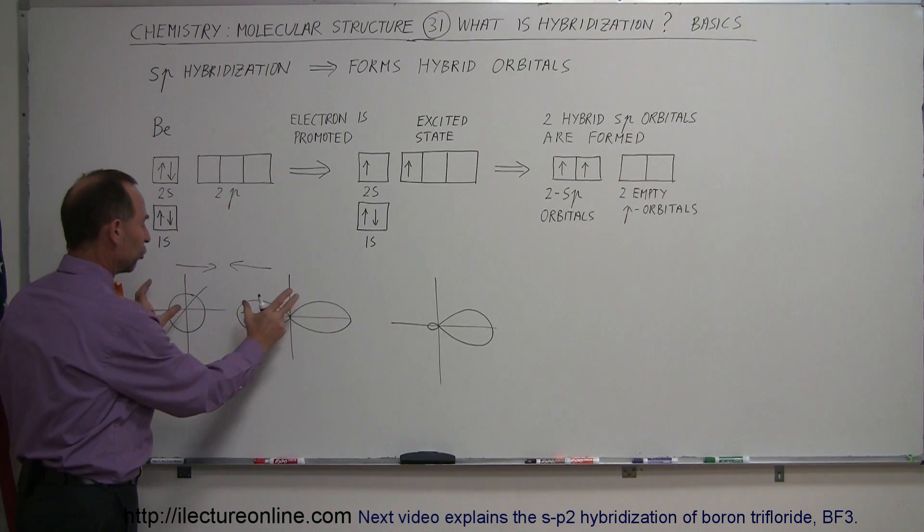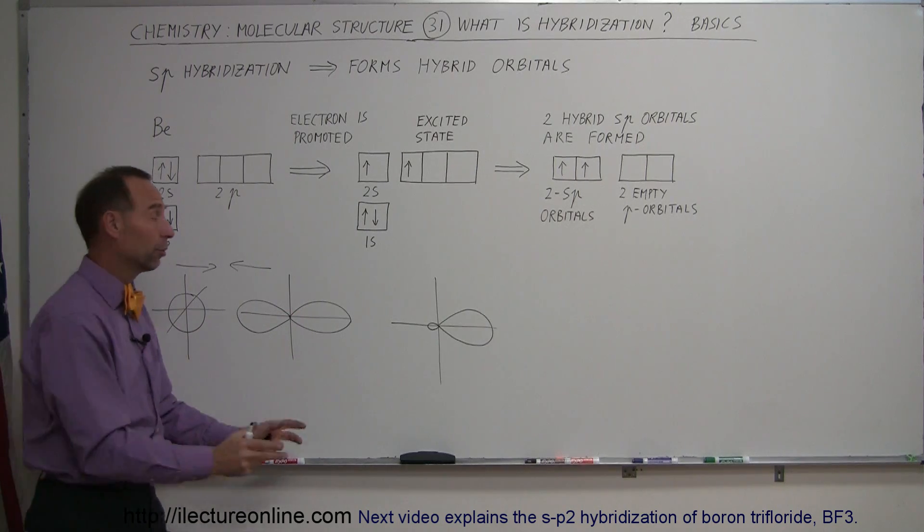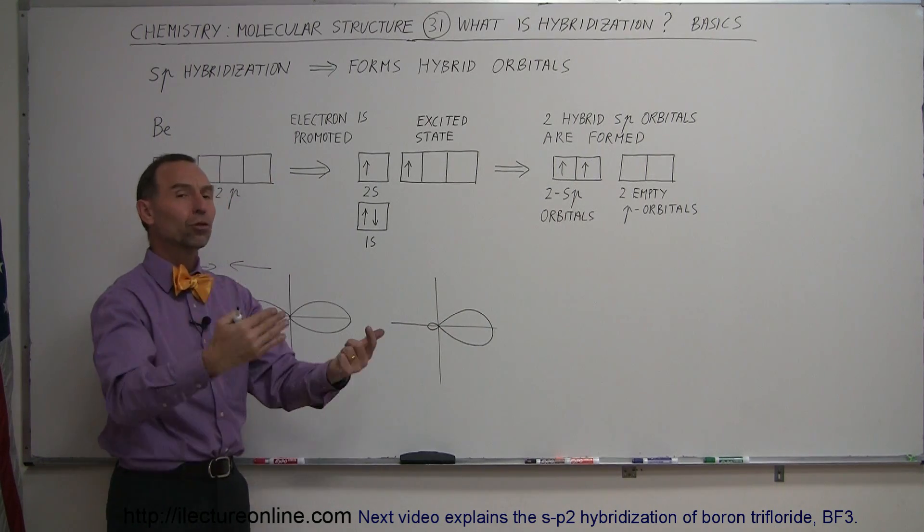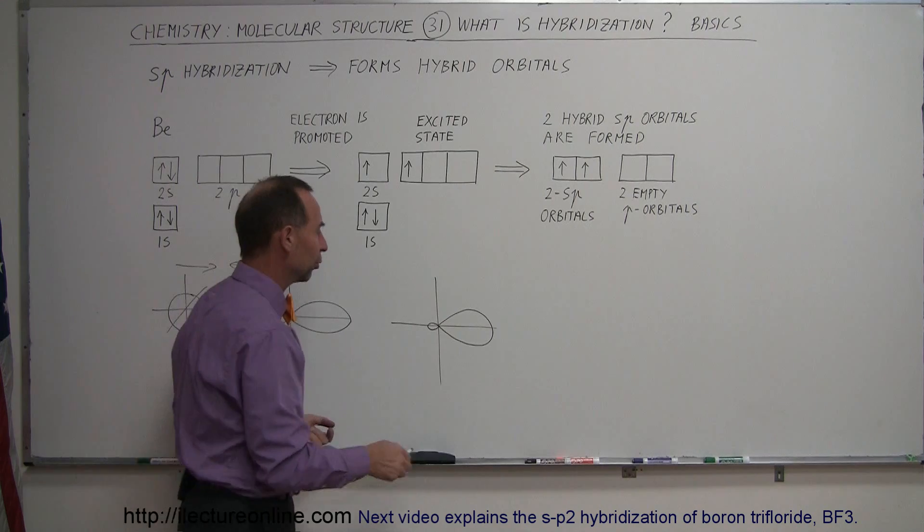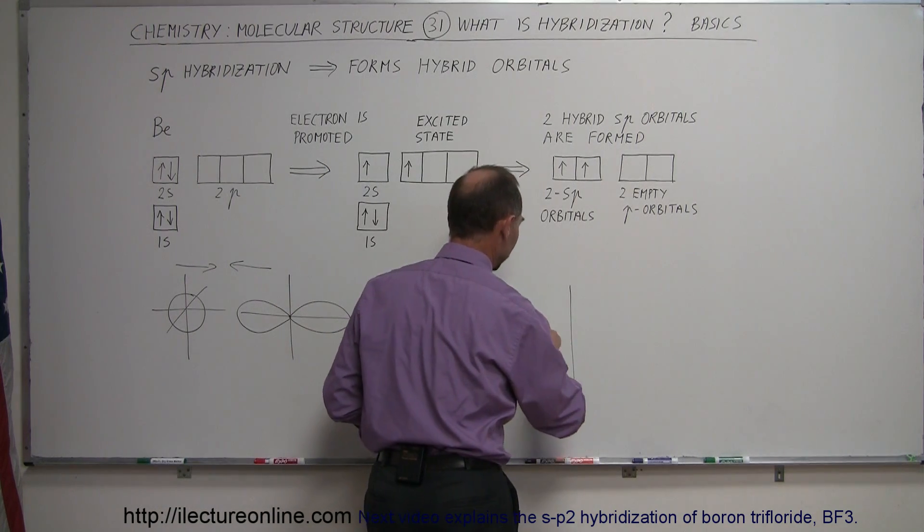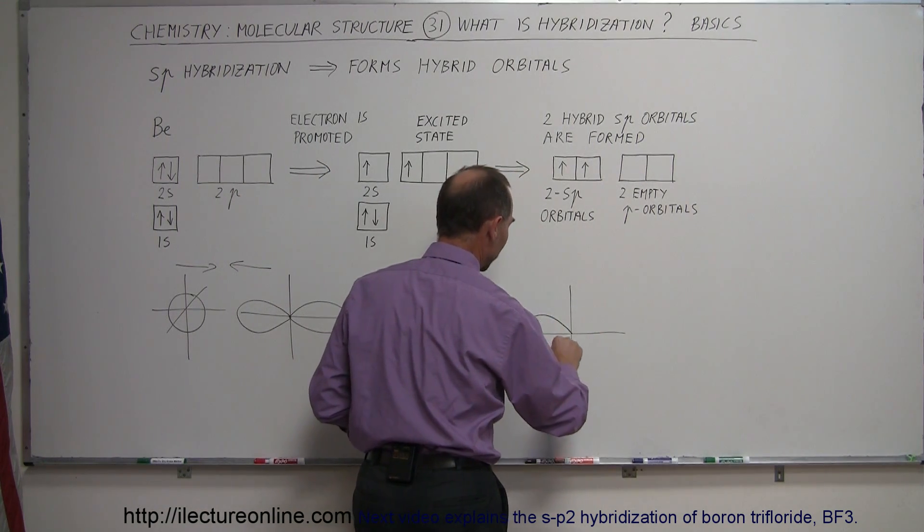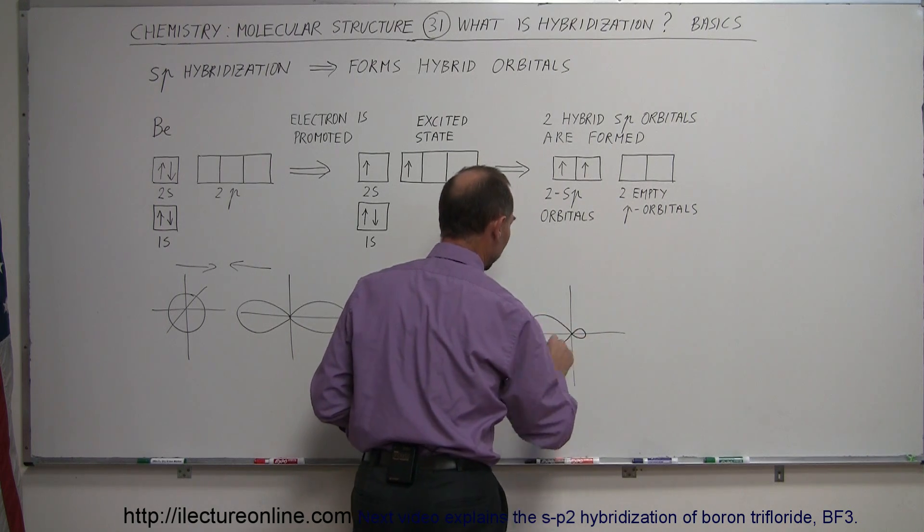Now, if you start with two orbitals that look like that, you end up with two orbitals that look like that. You can't just lose an orbital. So where is the second orbital? Well, the second orbital would look like this where the main lobe would be in the opposite direction and the tiny little lobe would be like this.